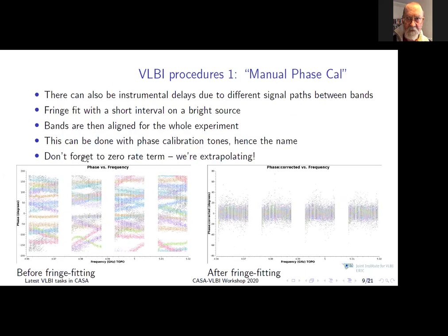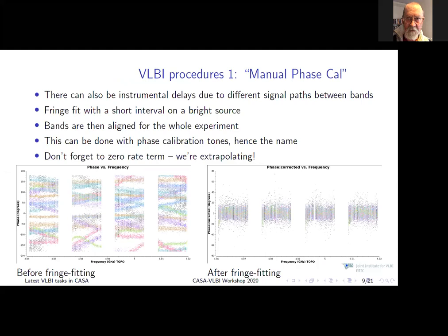One important thing about manual phase cal is that you do it on one short section of a very bright source. When you write down the solution, you write a zero rate term, because when you're going to apply it to the whole data set you really want to take out the delays — you don't want to be extrapolating the rate term, otherwise it will completely ruin your data. You'll see in the tutorial that this is a very important detail covered in the VLBI with CASA tutorial.